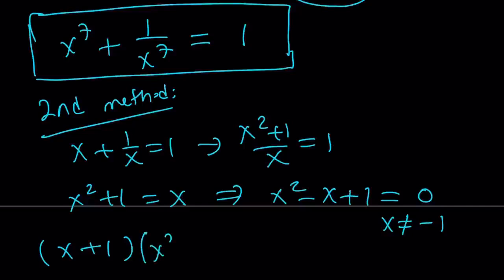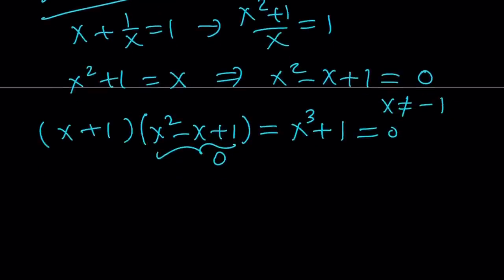I'm going to take this equation and multiply it by x plus 1. Why? Because I want to take advantage of a formula called sum of two cubes. This gives us 0 because we know that this is 0 and this is non-zero. So from here we get x cubed equals negative 1. And that gives us x to the 7th power becomes x cubed squared times x. But x cubed equals negative 1, so when you square negative 1, you're going to get—okay, I'm going to show my work.